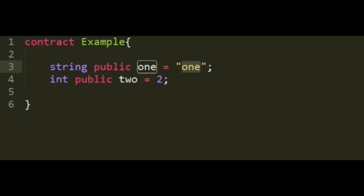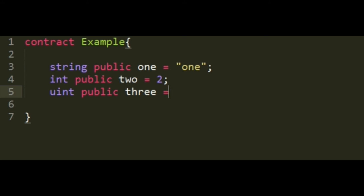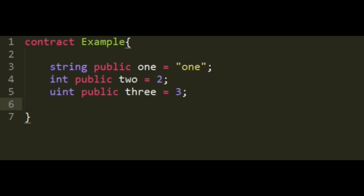Now we have another type of variable, which is called uInteger, or unsigned integer. Let's declare this variable to be public as well, and we're going to name this one 3, with an assigned value of 3. Both integer and unsigned integer might seem to do exactly the same — they will both hold integers — but there is one very important difference. The unsigned integer cannot contain any negative numbers. It won't be allowed to hold something like minus 3, only plus 3. Whereas integer will be allowed to hold negative numbers as well, such as minus 2.